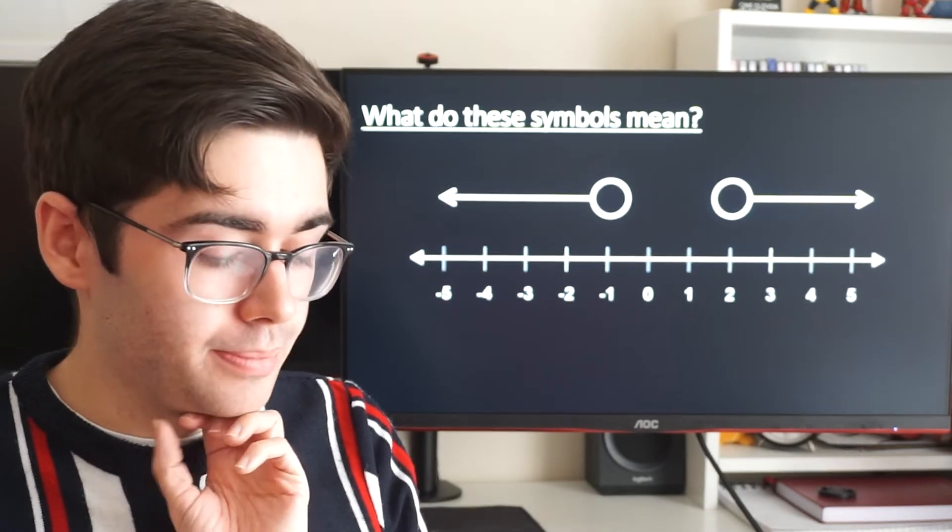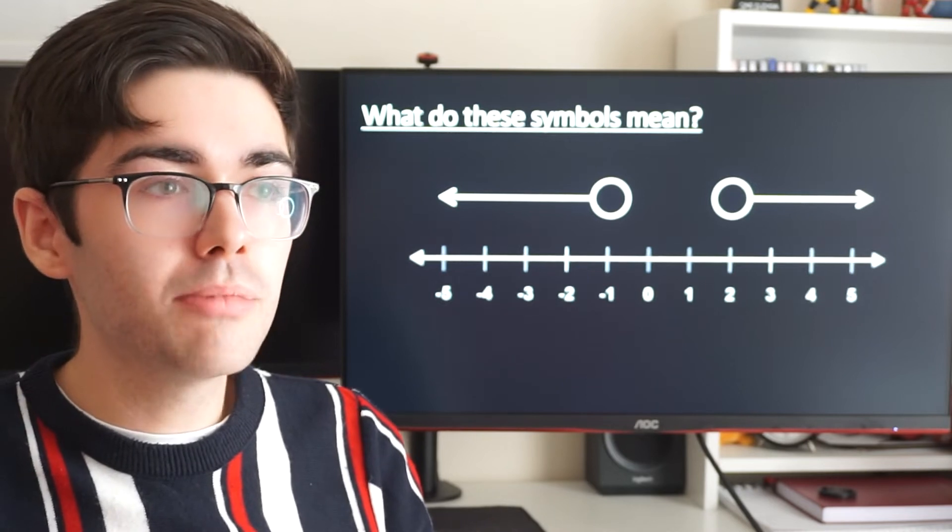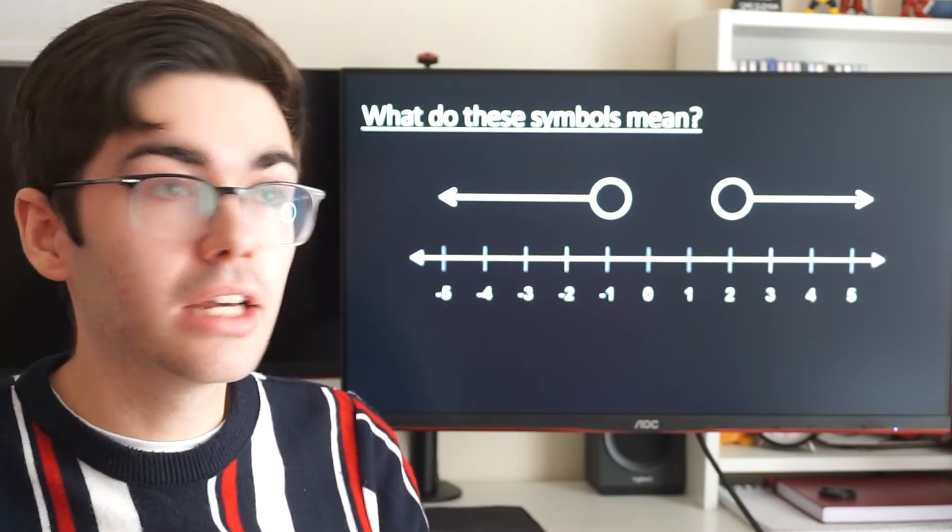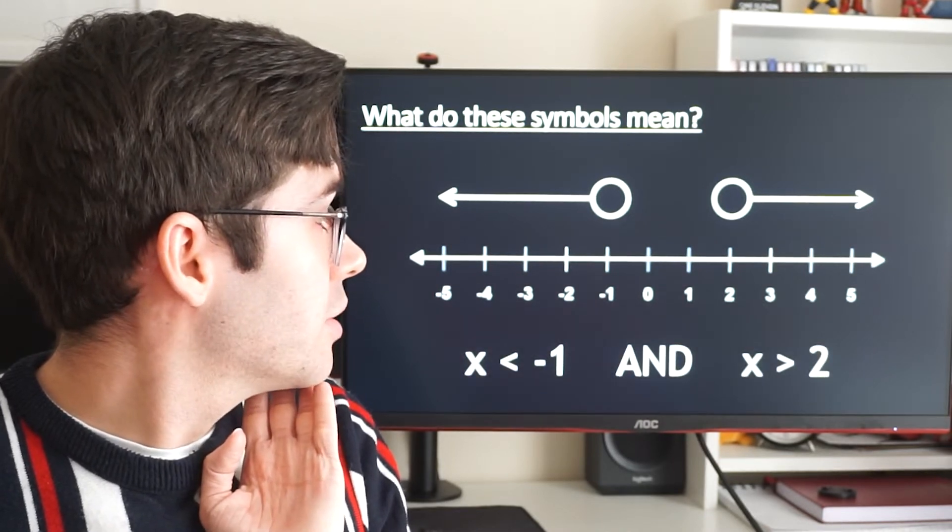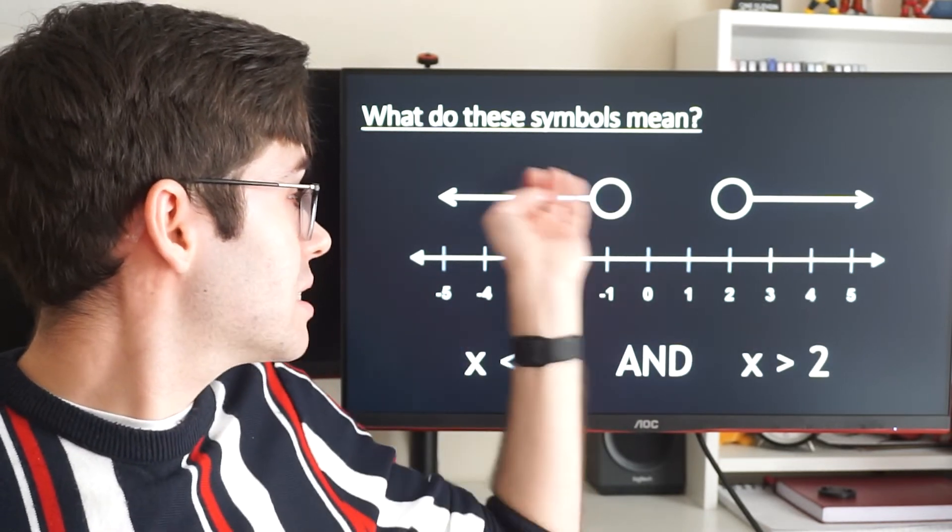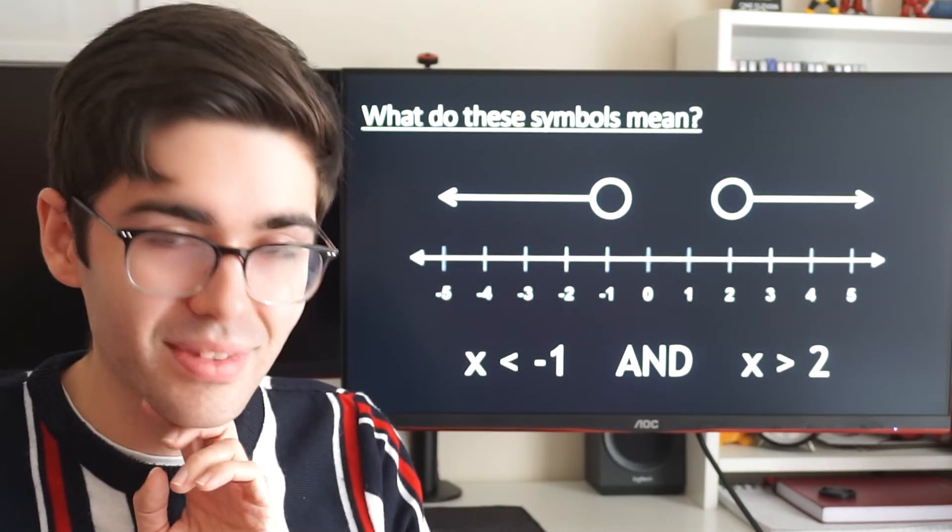Here's another weird one. We've got two different circles, two different arrows. This means x could be one of two things. It could be x is less than minus one or x is bigger than two. So that's showing you x is less than minus one and x is bigger than two. Those are the two options there.